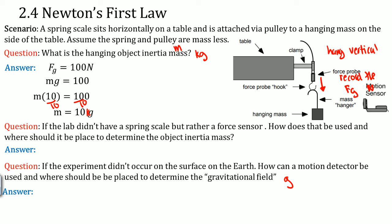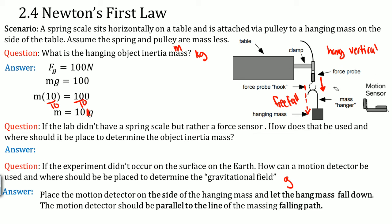So the object is going to fall down. As it falls down in free fall, a motion detector, which is going to be right here, will record it. You're going to place that motion detector on the side of the hanging mass and let the hanging mass fall down. It's going to go under free fall. The motion detector should be placed parallel to the line of the mass's falling path to record it.